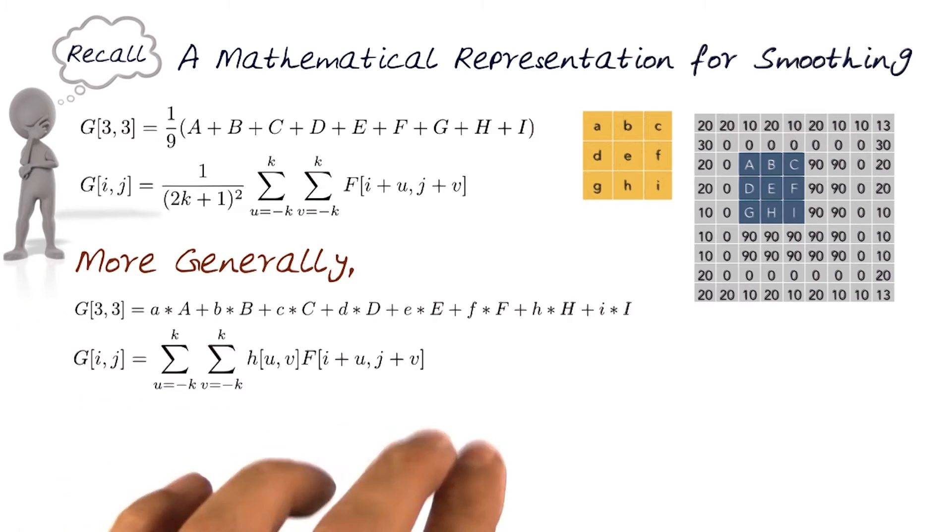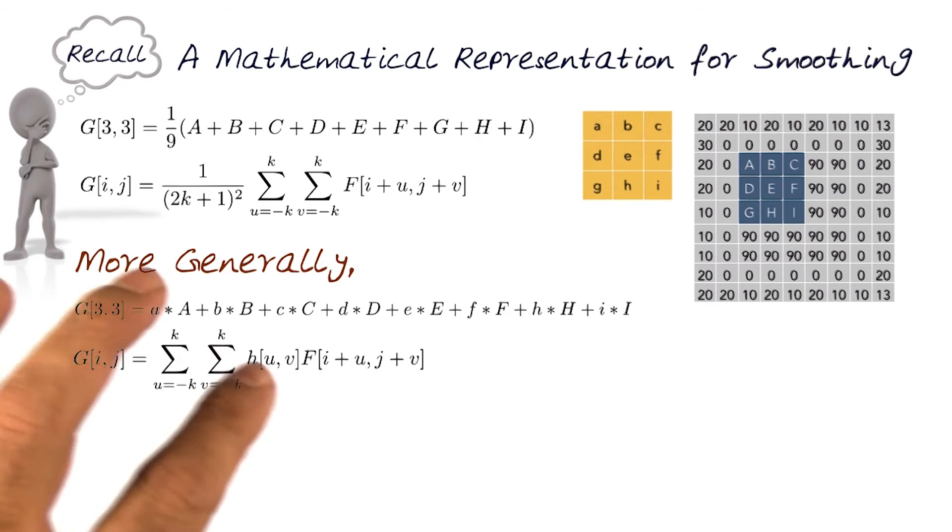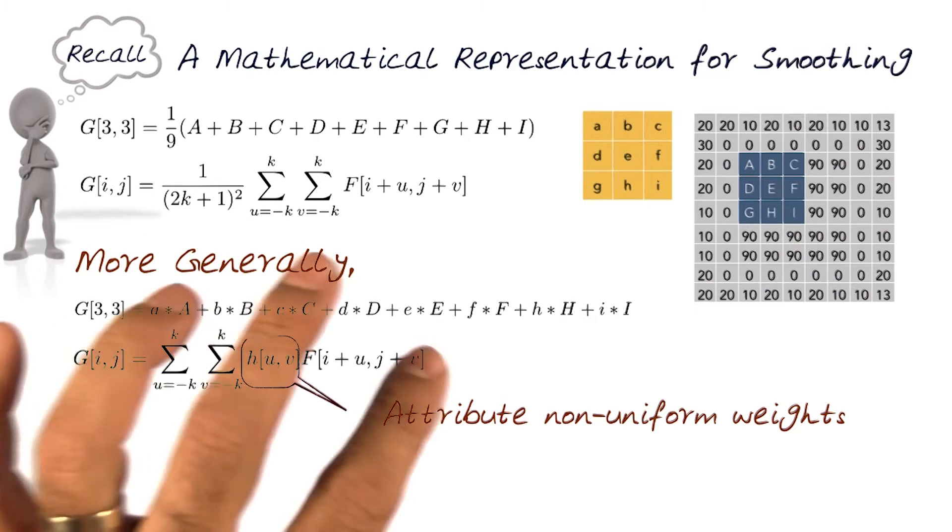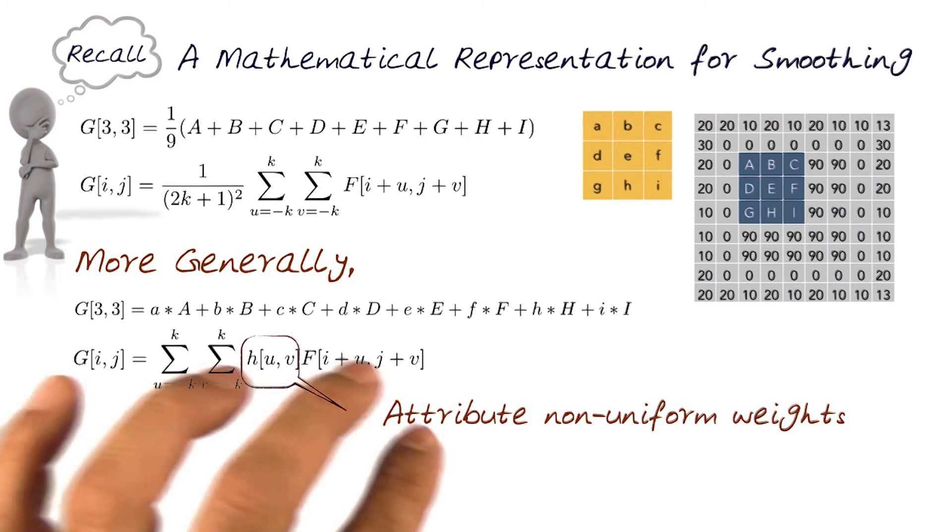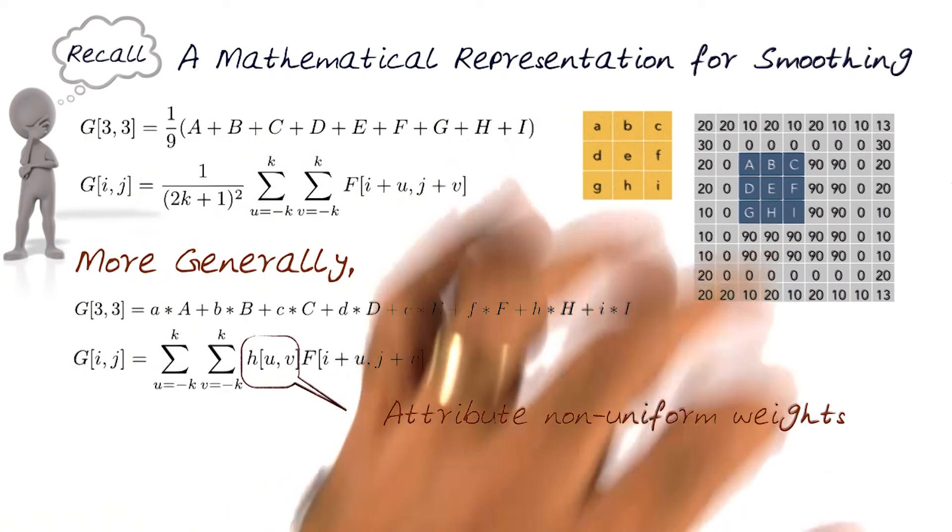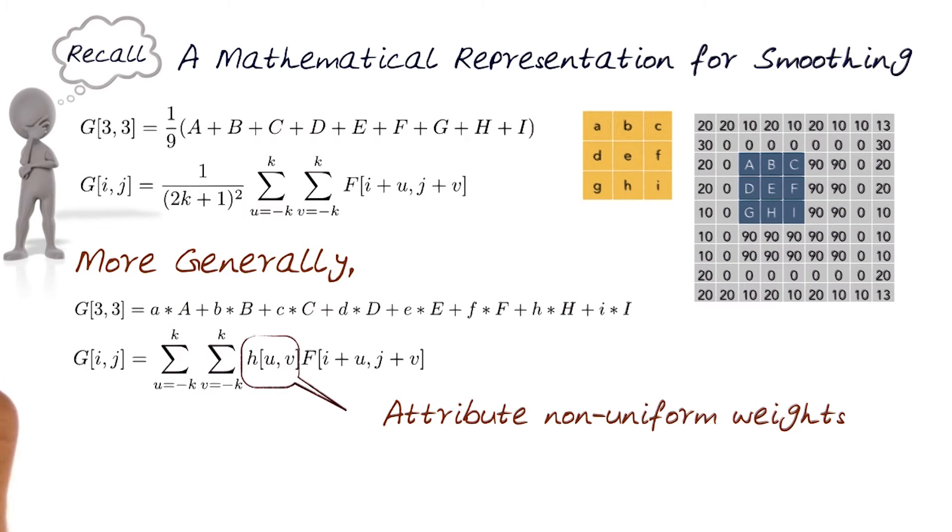And we came up with a term or a mathematical formulation, which basically now lets you loop over the whole image, but also provide non-uniform weights to each and every one of them to be able to create a general equation of how we can do any kind of filtering.